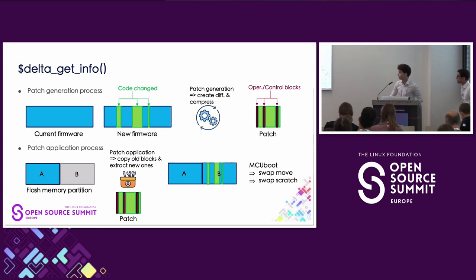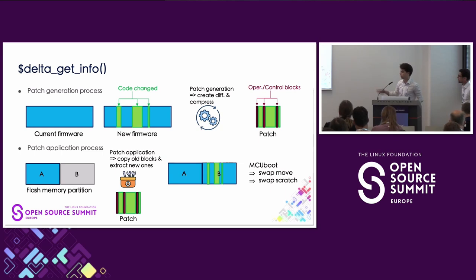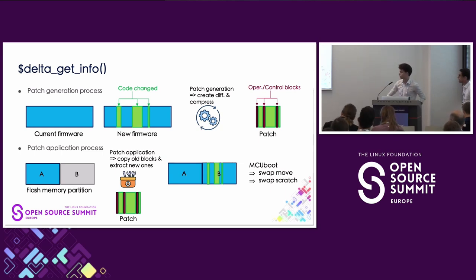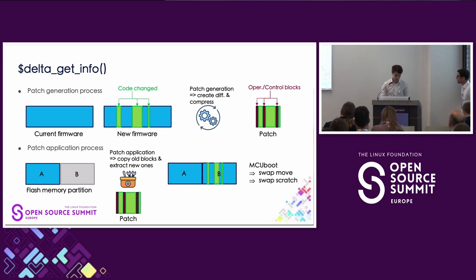How does the Delta update actually work? Basically, it reads the current firmware data and the data in the patch, combines the two, and with that we are able to recreate the new firmware. Once the new firmware is written to slot B, we can also use MCUboot to update our device.